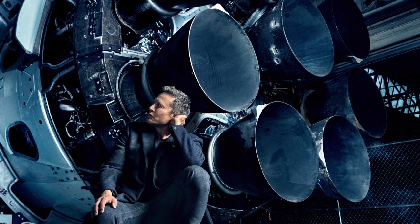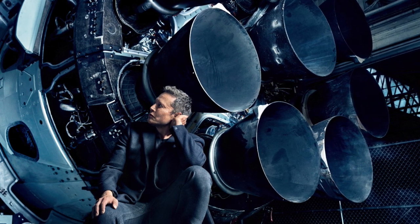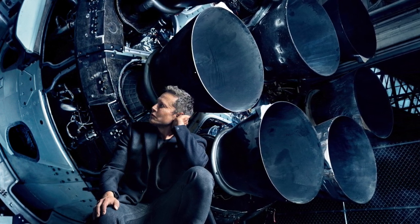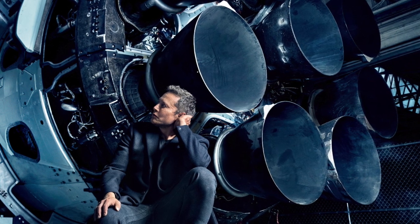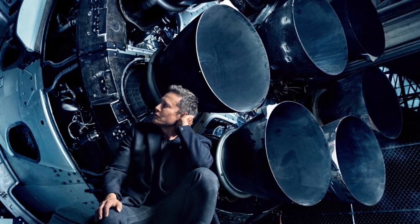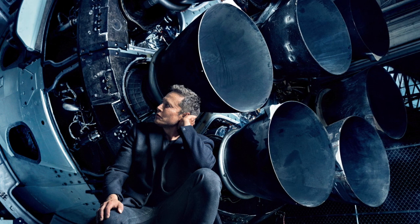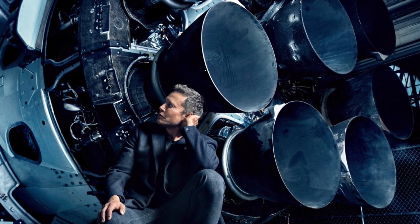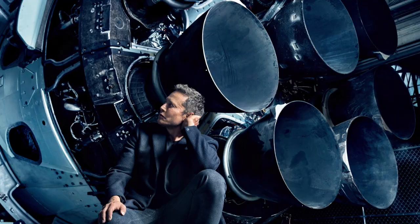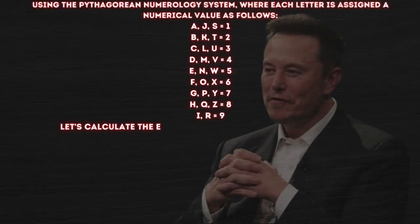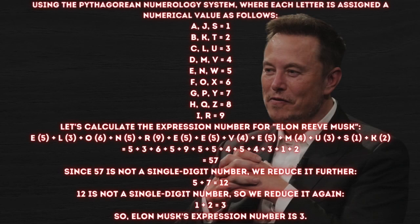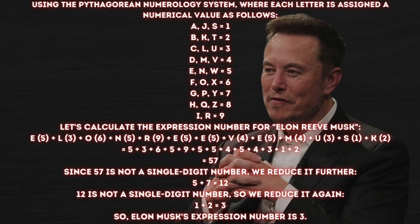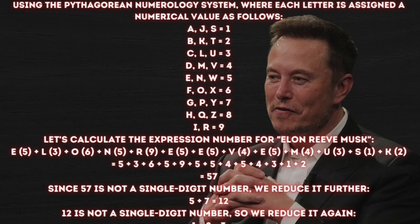For example, to calculate Elon Musk's expression number, we need to assign numerical values to the letters in his full birth name, Elon Reeve Musk, and then sum those values, reducing them to a single-digit number or a master number if applicable. Using the Pythagorean numerology system, where each letter is assigned a numerical value as shown on screen, let's calculate the expression number for Elon Reeve Musk.